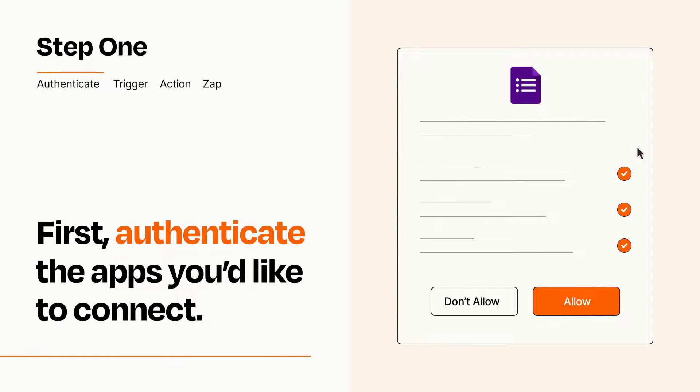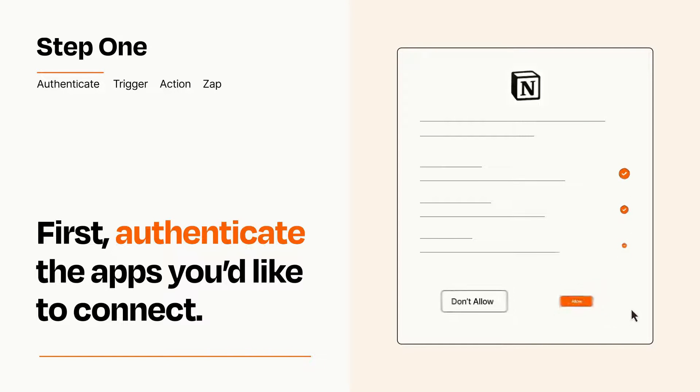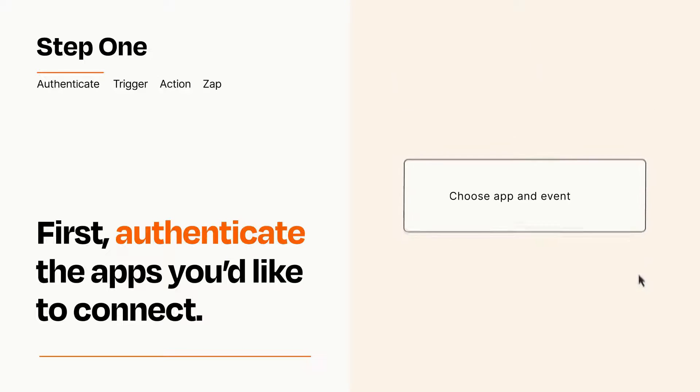To get started, you'll just need to authenticate your apps, which takes just a few seconds. Zapier meets industry standards for encryption when connecting with each of your apps.